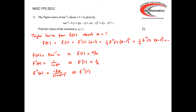Using either the chain rule or the quotient rule, we can find that the second derivative of f is minus 2x over (1 + x²) squared. So the second derivative of f at x equals 1 is minus 2 over 2 squared, which gives minus 1 half.